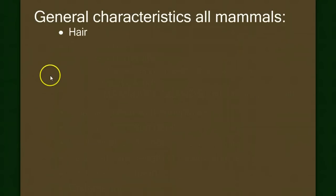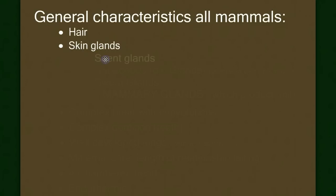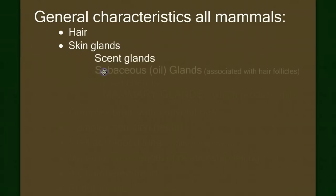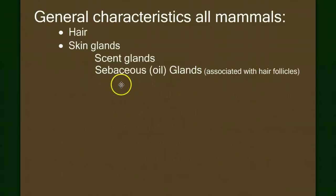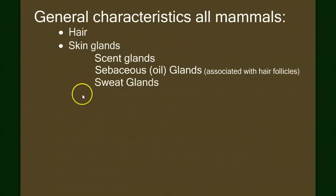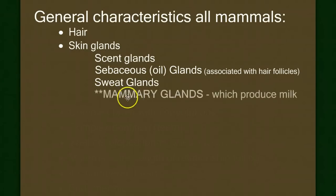The next characteristic that is defining of mammals is the presence of skin glands. Mammals have scent glands, sebaceous glands — which are oil glands associated with hair follicles — sweat glands, and finally the defining characteristic of the group: mammary glands, which produce milk.